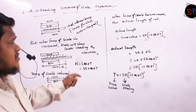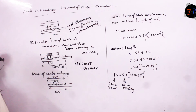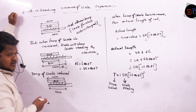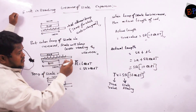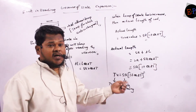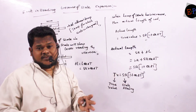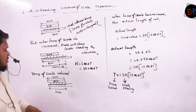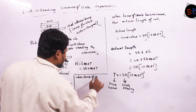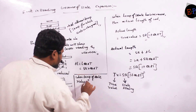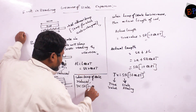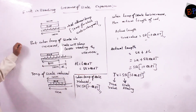Similarly, when the temperature of the scale has reduced, the scale will always show a greater reading. Therefore the equation becomes: true value equals scale reading minus scale reading × α∆T, which gives Sr × (1 − α∆T). So when the temperature of the scale is reduced, true value equals scale reading multiplied by (1 − α∆T). That's it.